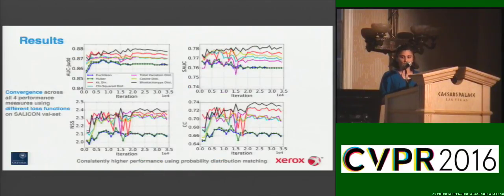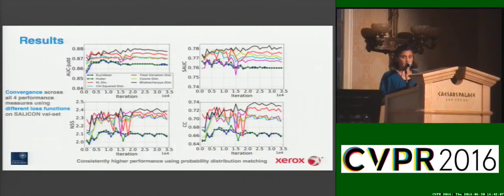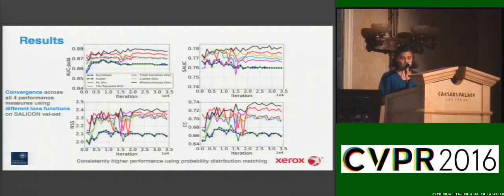These are the convergence plots on the SALICON validation set while training on the train set. As we see, models trained on probabilistic losses consistently outperform those trained on Euclidean or Huber loss. Notably, Bhattacharyya distance-based models are the leading ones across all four performance measures: AUC-Judd, shuffled AUC, normalized scan path saliency, and the correlation coefficient.